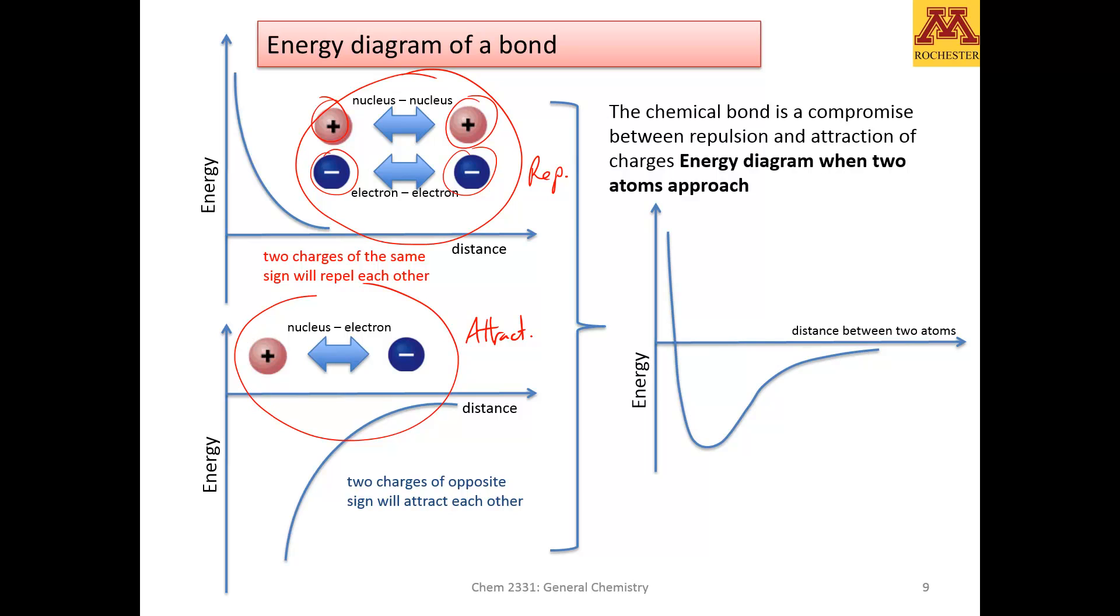So what is the result? The result is what we call the energy diagram of a bond, in which it has a clear attraction zone at the beginning. So two atoms, as you get them together, they'll start attracting until they reach a point.